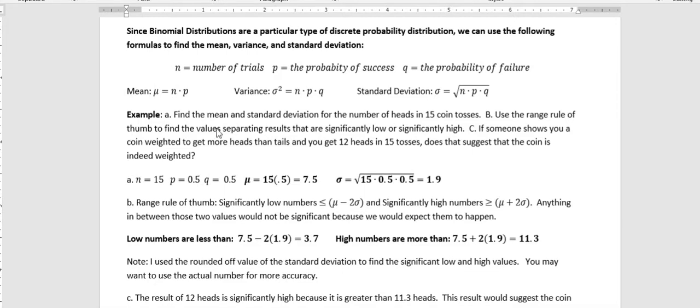So the first part is asking us to find the mean and standard deviation. We know that n is 15. We know that p is 0.5 because when you flip a fair coin, there's always a 50-50 chance to get a heads or a tails. And q is also 0.5 because 1 minus 0.5 is still 0.5. So the mean is 15 because that's the number of tosses times the probability of 0.5. That gives us 7.5.